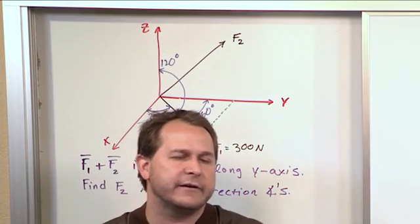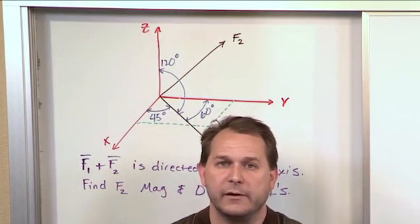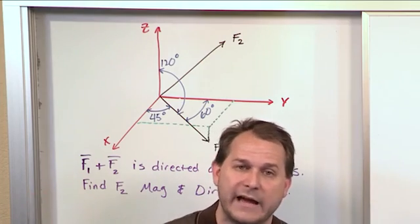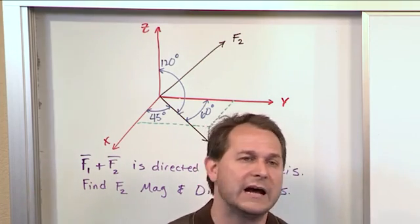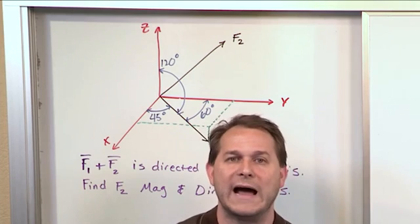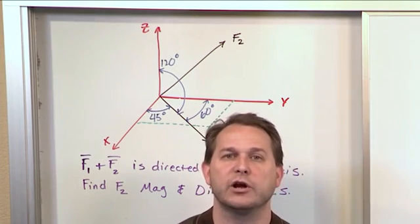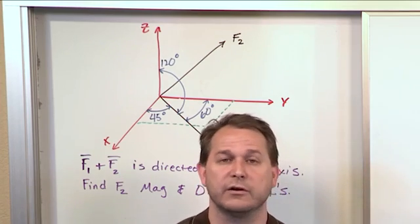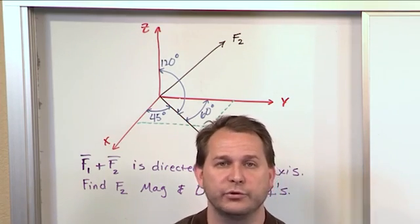So what it's basically saying is here is a vector that we know everything about. Here is a vector that we don't know anything about. But we know that when we add them together, the resultant lies only along the y-axis. That means there's a component along y for the resultant. But there's no component along x and no component along z. That's a critical piece of information we'll use to solve the problem.